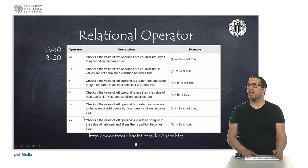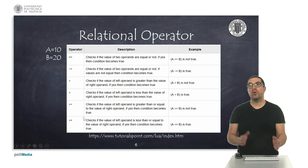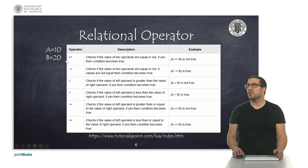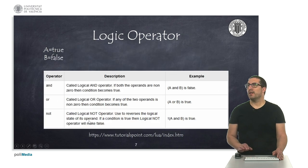We have relational operators to compare numbers. This is quite simple because we have this double equal sign here to compare if two things are equal or not, and it returns true if they are. This one is if they are not equal. This is greater than, smaller than, or greater or equal than, smaller or equal than.